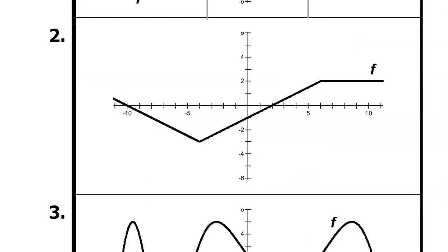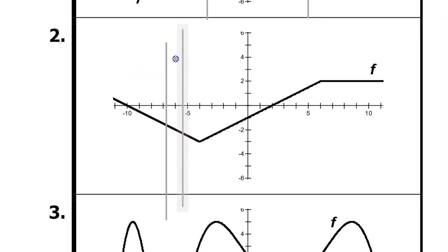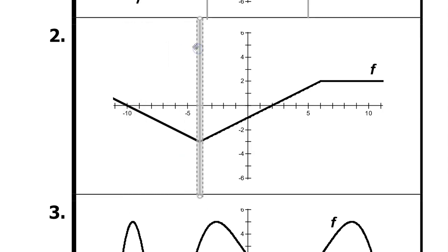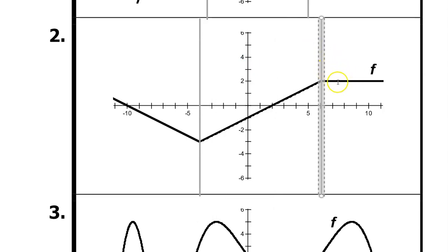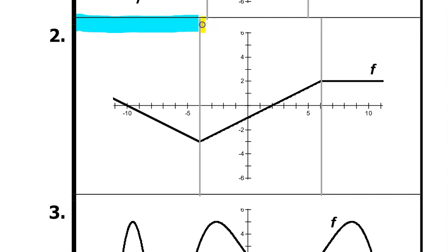So this is a possible graph of f prime — there are others. Problem number two. Again let's start out by separating function f into intervals of increasing and decreasing. It seems to be decreasing from here to here, then increasing from here to here. After this it's neither increasing nor decreasing. So we have a decreasing interval, an increasing interval, and then a flat interval which we will deal with later.